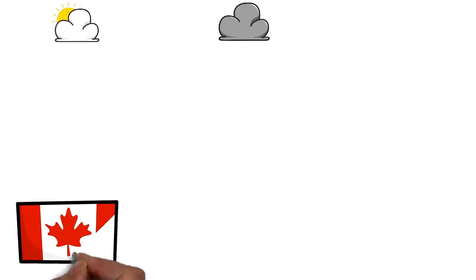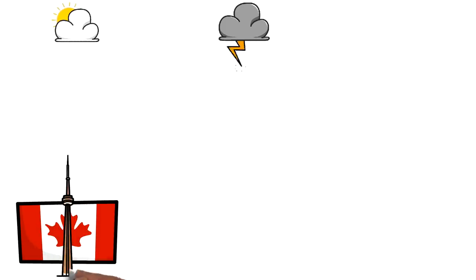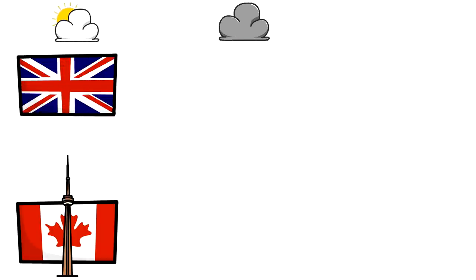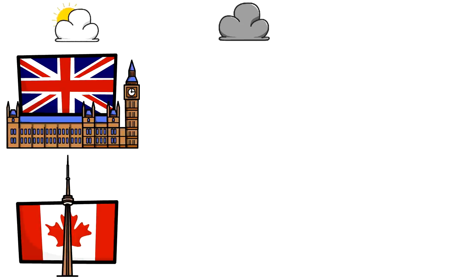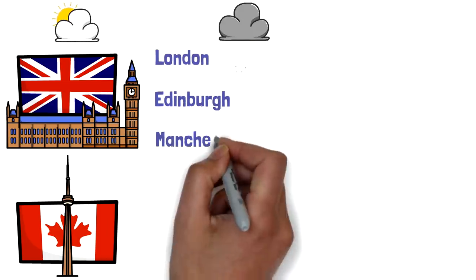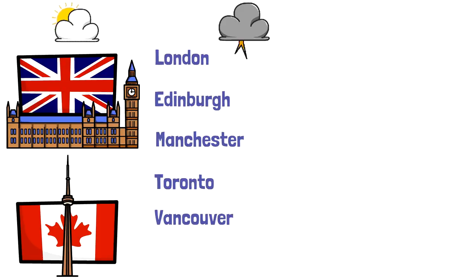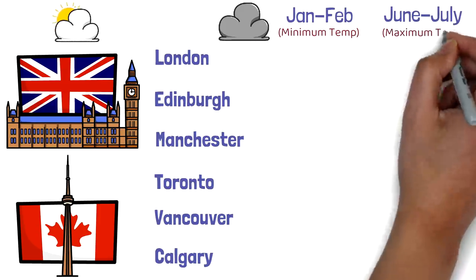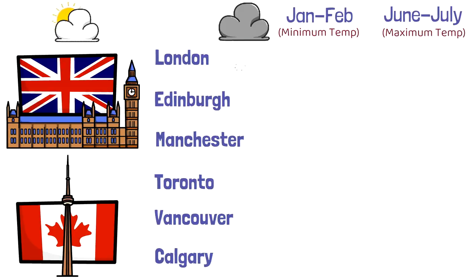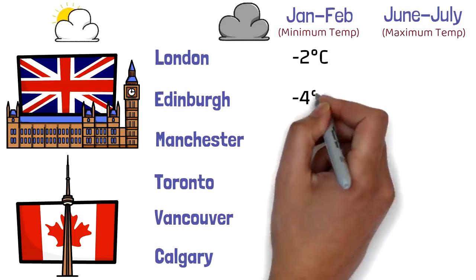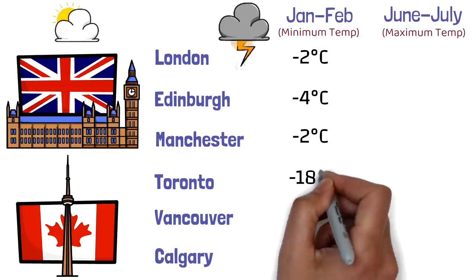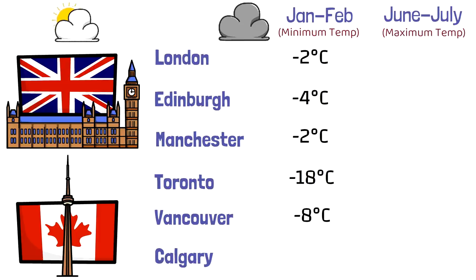This means if you want to stay close to your home country — if your home country is India, Bangladesh, or Pakistan — immigrating to UK would be a little easier because commuting takes less time. Now let's discuss weather, because Canada is famous for its harsh winter climate. I've listed three cities from each country: London, Edinburgh, and Manchester from UK, and Toronto, Vancouver, and Calgary from Canada. In January and February, the minimum temperature in London was minus 2°C, Edinburgh minus 4°C, Manchester minus 2°C, and Toronto minus 18°C.